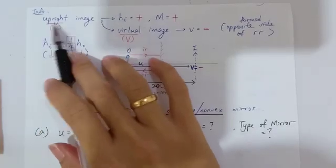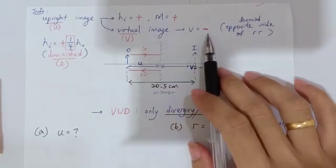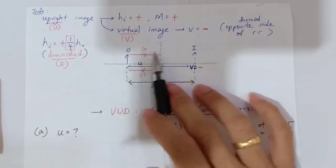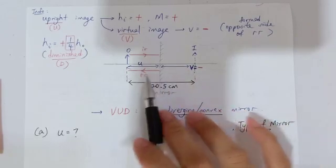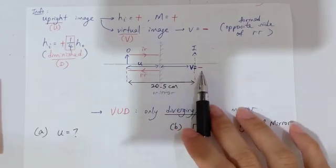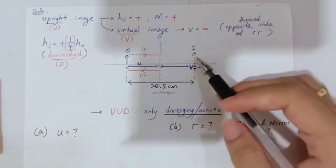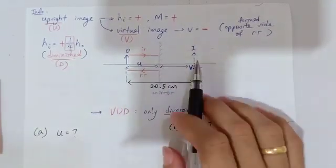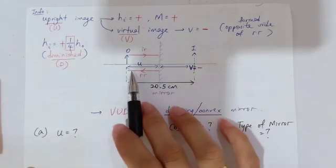Just now, the question mentioned it is an upright image, so straight away we know it is a virtual image. Virtual image means V must be negative. And when V is negative, it is on the opposite side of the reflected ray. For a mirror, light is always reflected, so image distance is always compared with the reflected ray. Since V is negative, the image is on the opposite side of the reflected ray — formed at the back of the mirror.